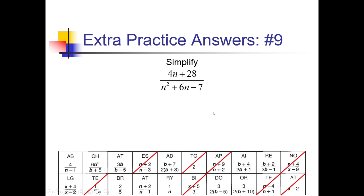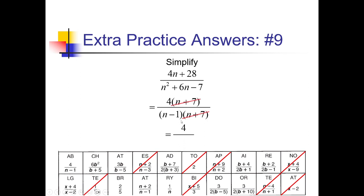For number 9, we can factor numerator and denominator. For my numerator, all I can do is take out a common factor of 4, leaving 4(n + 7). Down here, I need factors of negative 7 that add up to 6 — with negative 1 and positive 7 that works, giving me (n − 1)(n + 7). The (n + 7)s cancel. We have a 4 left over in the numerator over (n − 1). 4 over (n − 1) is the very first item here, so I'll cross that off.